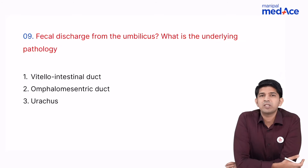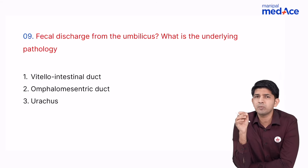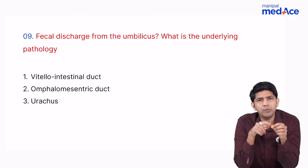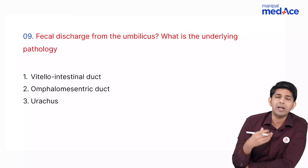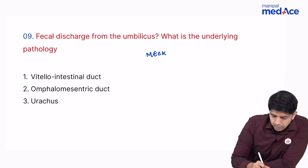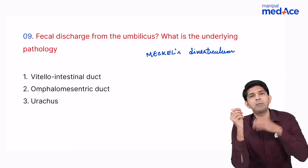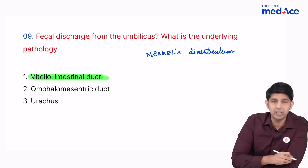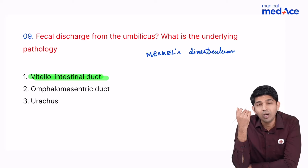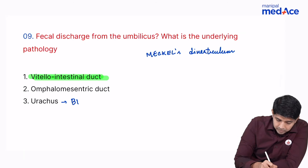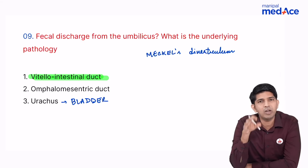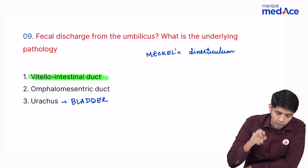An intraoperative image showed feculent discharge from the umbilicus with a tubular structure from the small intestine — likely the Meckel's diverticulum. When the umbilicus has patent communication with the intestine, the condition is called a patent vitello-intestinal tract. We only call it a urachus if it communicates with the urinary bladder. Here it was the intestine with feculent discharge, so the answer is patent vitello-intestinal tract.